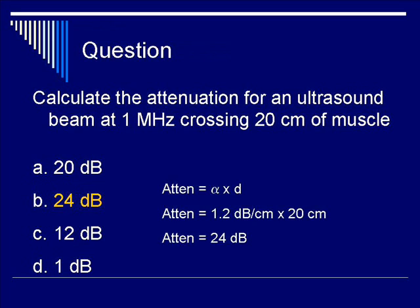The total attenuation in dB is calculated by multiplying alpha by the distance. Since alpha is 1.2 dB per centimeter, multiplying that by 20 centimeters yields 24 dB.